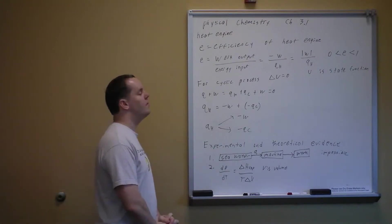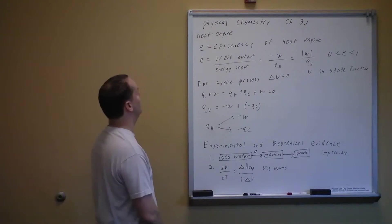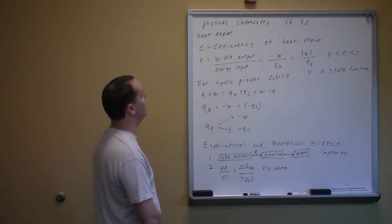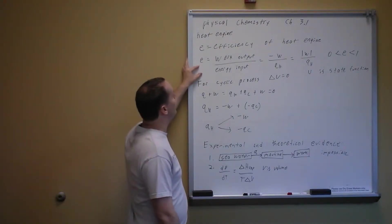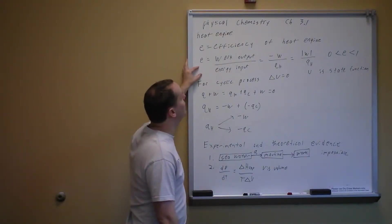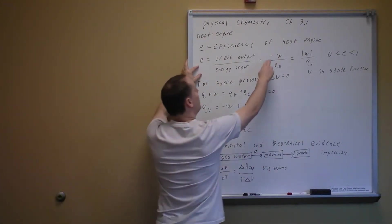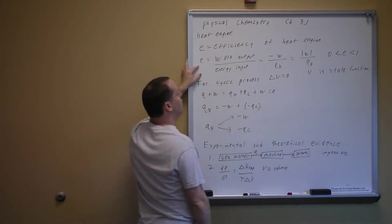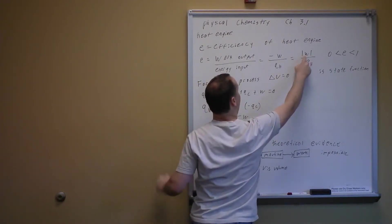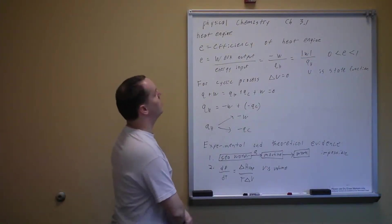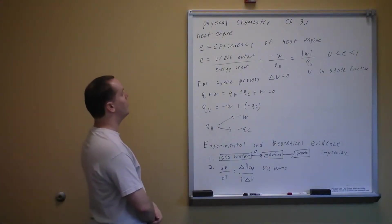The efficiency of a heat engine, lowercase e, is the work output divided by the energy input. Since work is actually coming out, we put a negative sign in to get a positive value, so efficiency equals the absolute value of W divided by QH. This ratio ends up between zero and one.